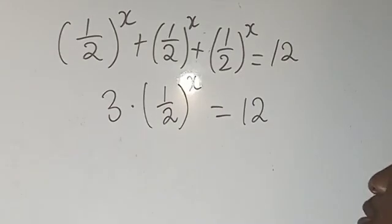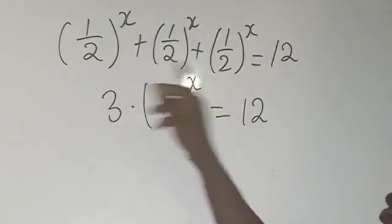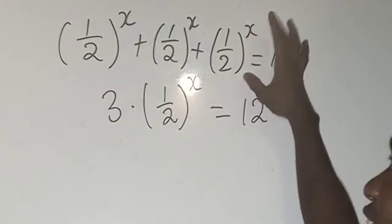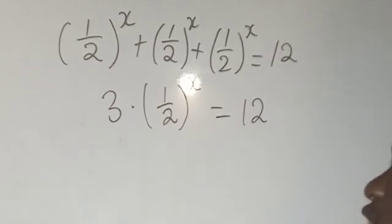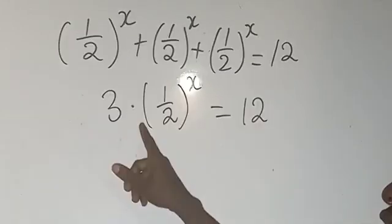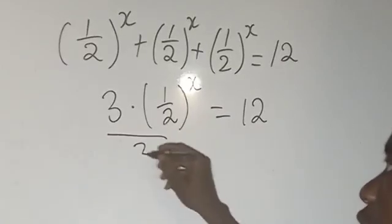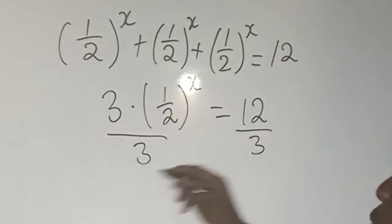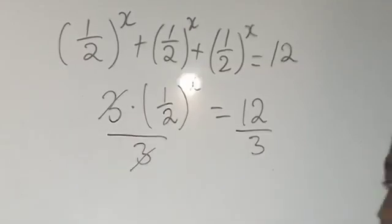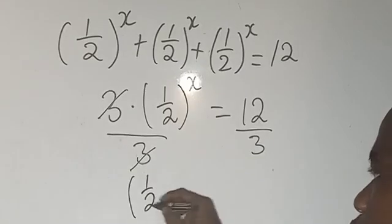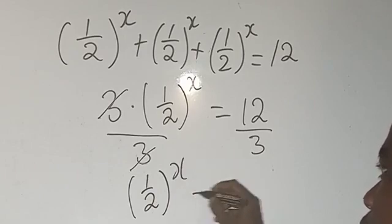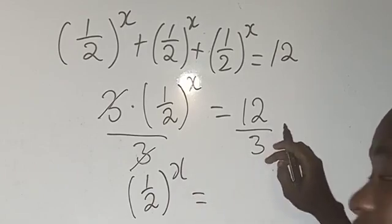So this is how we reduce it. We have reduced it to this form. Now this is a multiplication, so we can divide both sides by 3. We're going to have this canceling, so we get (1/2)^x = 4, since 12 divided by 3 gives us 4.